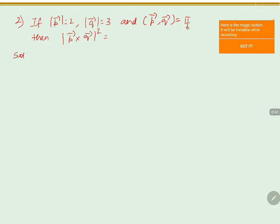The given values in the problem are: magnitude of P equals 2, magnitude of Q equals 3, and the angle between vector P and vector Q equals 5π/6.